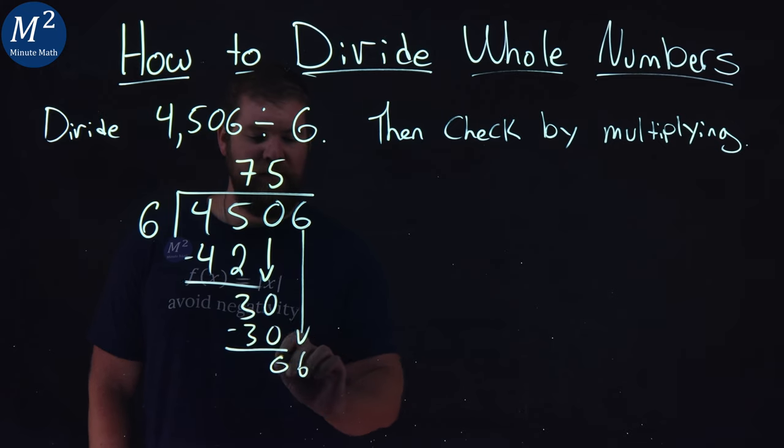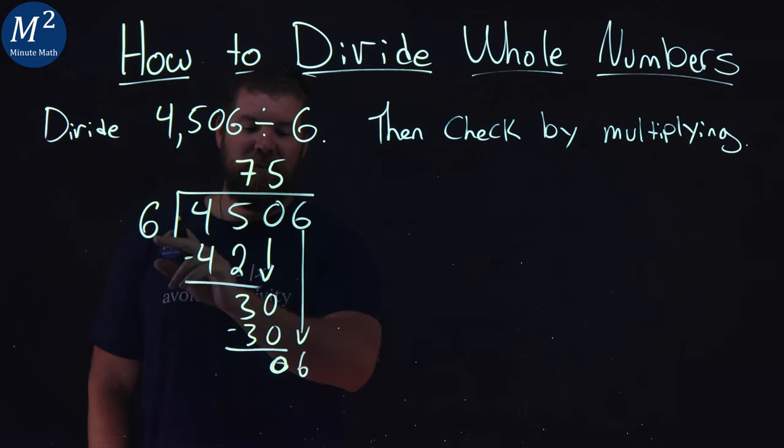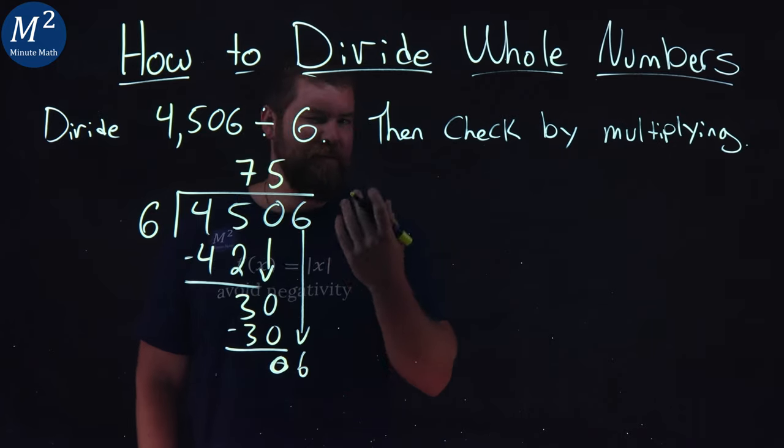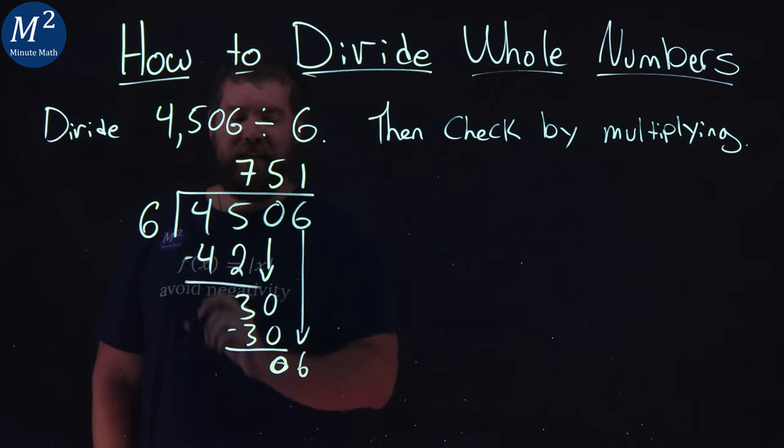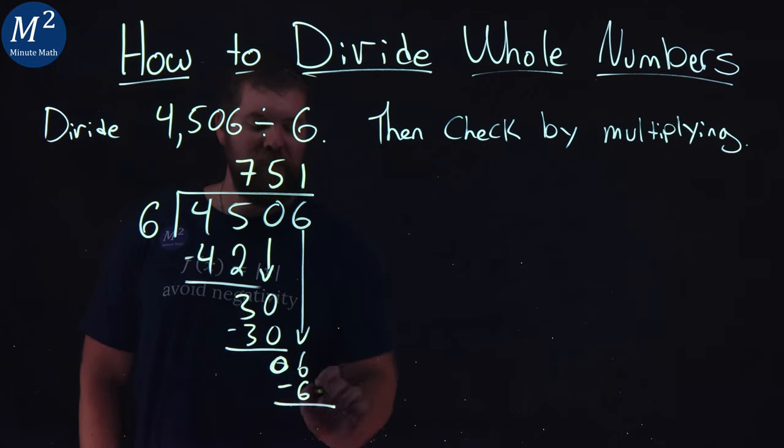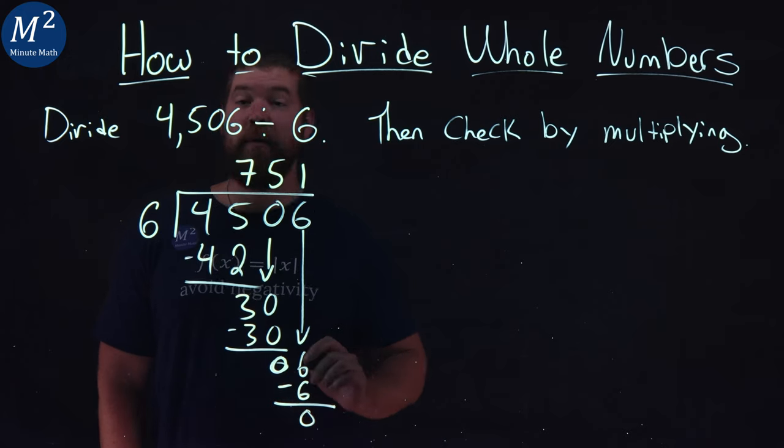Bring down the 6. That's a 0 here. Does 6 go into 6? Yeah, exactly one time. 1 times 6 is 6. Subtract the two numbers and we get 0, and we're done.